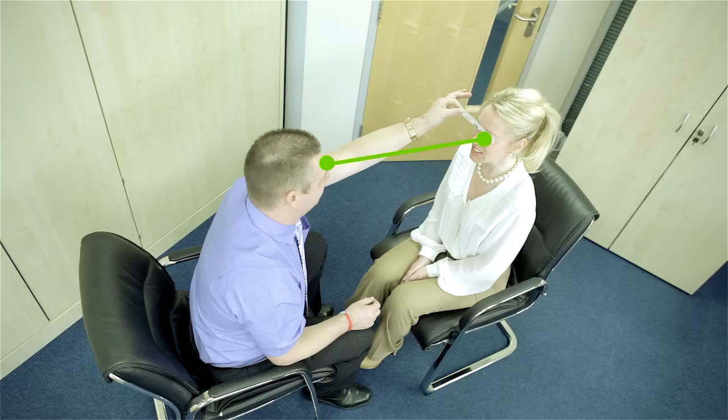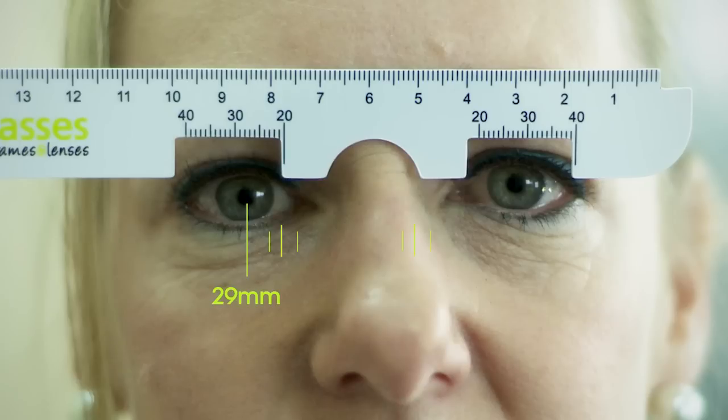Without moving the PD ruler, the person taking the PD measurement should close their left eye and use their open right eye to look into your left eye directly opposite. Again, make sure you look directly into their open eye as you are being measured. Make a mental note of the second measurement from the bridge of the nose to the center of the pupil in millimeters.